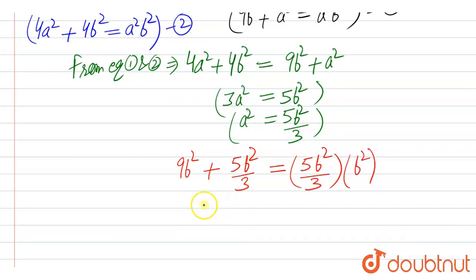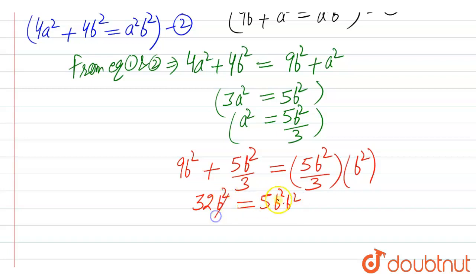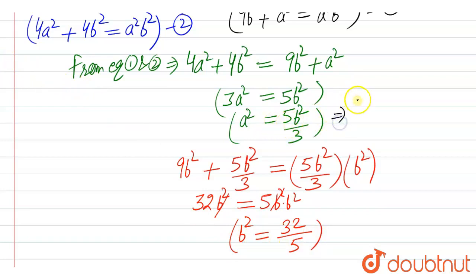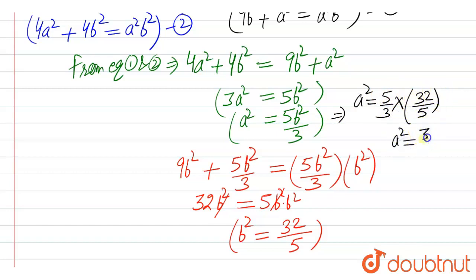Putting this value in equation number 1, we get: 9b² + 5b²/3 = (5b²/3) × b². This becomes 27 + 5, that is 32b² over 3, with the 3 cancelling out. So 32b² = 5b⁴, and when b² is cancelled, the value of b² we get is 32/5. From here, a² = (5/3) × (32/5) = 32/3.